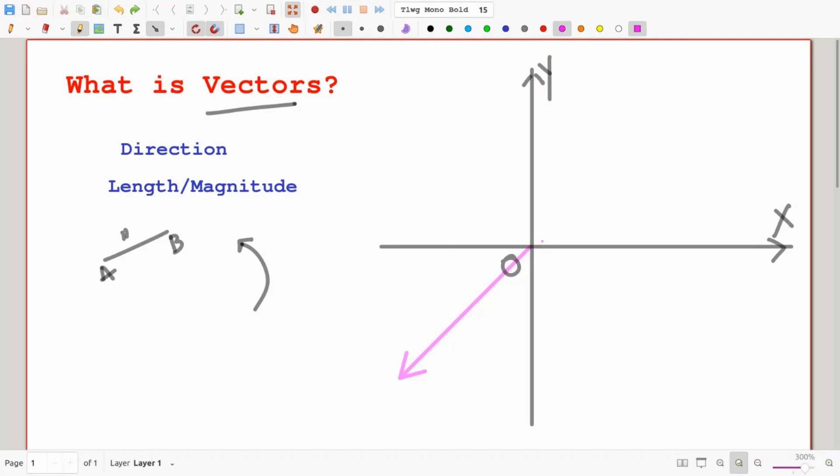This is also a vector because it has a certain direction pointing towards, it also has a certain length. Is this a vector? Yes, even though it doesn't start at the origin, but it is pointing towards certain direction and it also has a certain length.